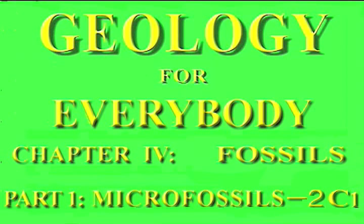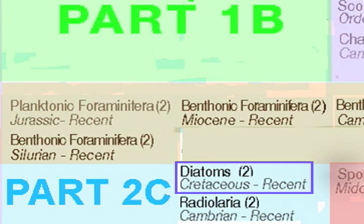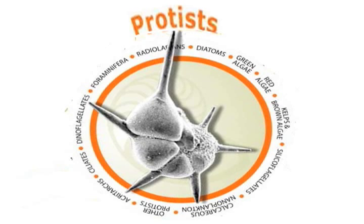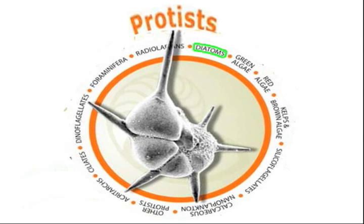Welcome to part 2C1, the next to last of these shows about microfossils. Like the other protists, diatoms and radiolarians are listed on this University of California Museum of Paleontology protist wheel. Protists are eukaryotes, most of them are unicellular, and a majority are marine.